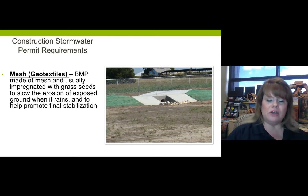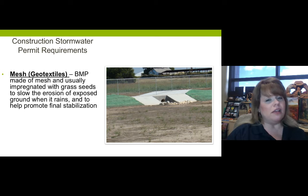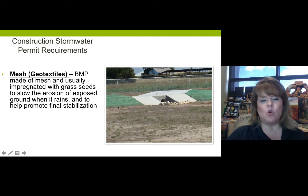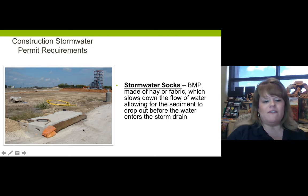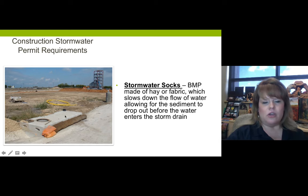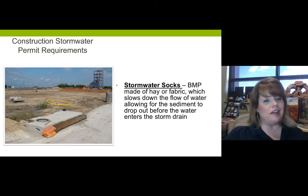Mesh or geotextiles is another name for BMPs made of mesh, usually impregnated with grass seeds, to slow the erosion of exposed ground when it rains. Ultimately they help develop final stabilization where grass will grow and raw sediment is covered — important for closing a construction site. These are stormwater socks, one of my favorite BMPs. They can come in fabric or hay, and they slow down the flow of water around an inlet structure where stormwater would run into the ground. They stop the sediment on one side and let the water pass through. All BMPs work the same — they're just designed a little differently in their shape.